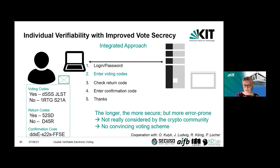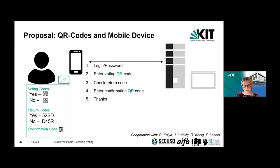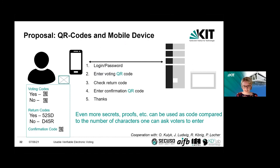This is why there's not much research on this idea from the crypto community — there's no convincing voting scheme that has voters entering voting codes, comparing return codes, and then entering confirmation codes. But we thought: we had the idea of using QR codes with the Helios system, why not use it here as well? Maybe we can improve the voting ceremony enough to propose it to the community. Every code that needs to be entered could be a QR code — and the good thing about QR codes is that you can put much more secrets, proofs, and information into one item than you could ever ask a voter to enter manually.